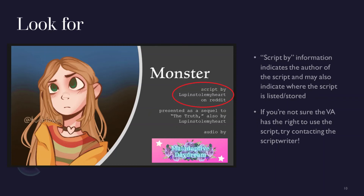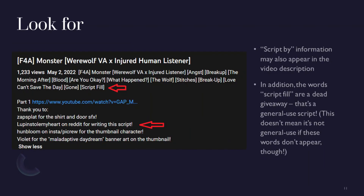Here are some things you can look for on a VA video that are hints that it's not content reuse. On the thumbnail of my video, you can see the 'script by' information — it indicates the author of the script and may also indicate where the script is listed or stored. Not everyone puts this on the thumbnail; it may also be in the video description. If you're not sure the VA has the right to use the script, try contacting the script writer. The term 'script fill' in the description is a dead giveaway that the script is a general use one. If you do see it, it's not content reuse.